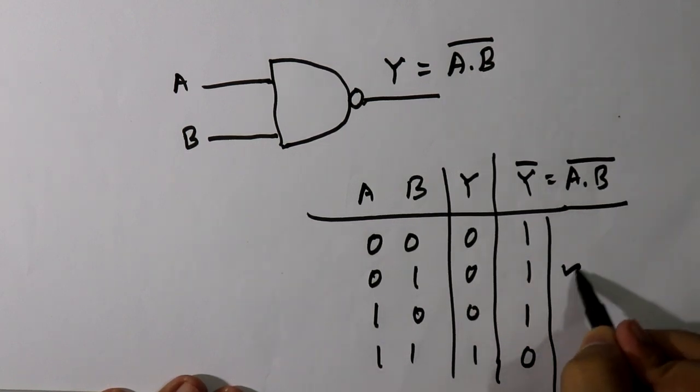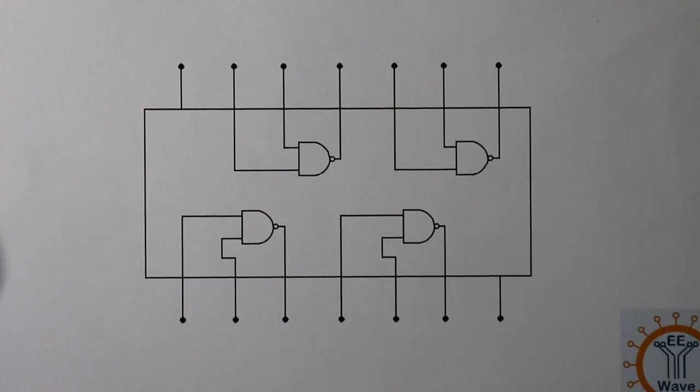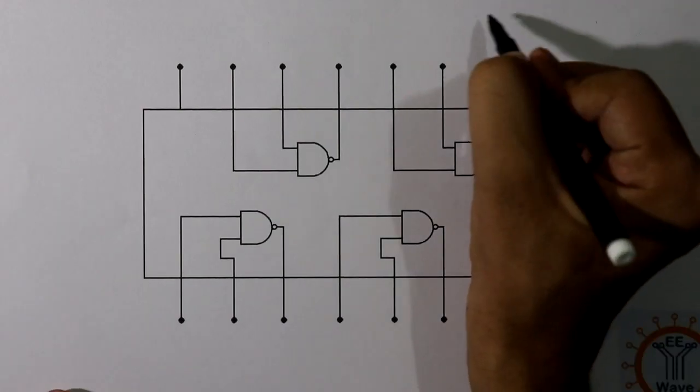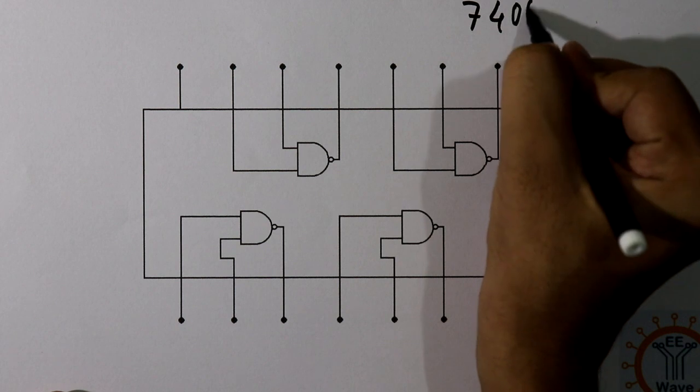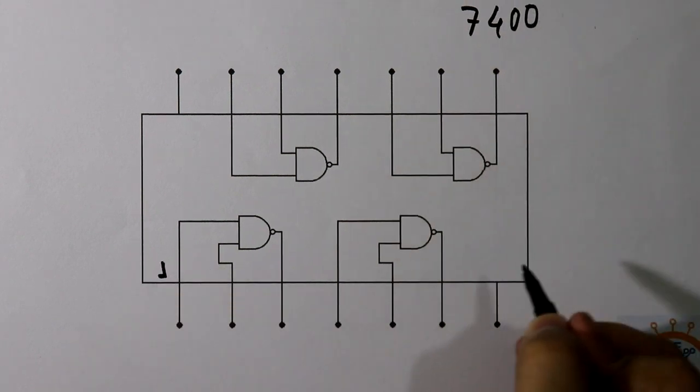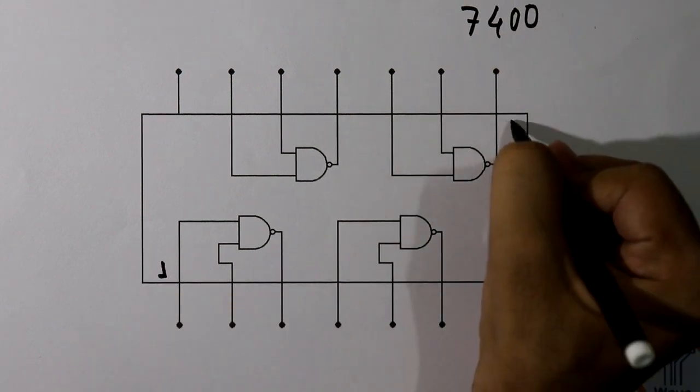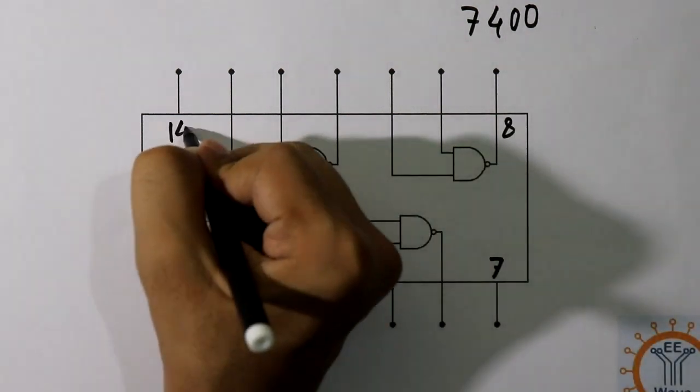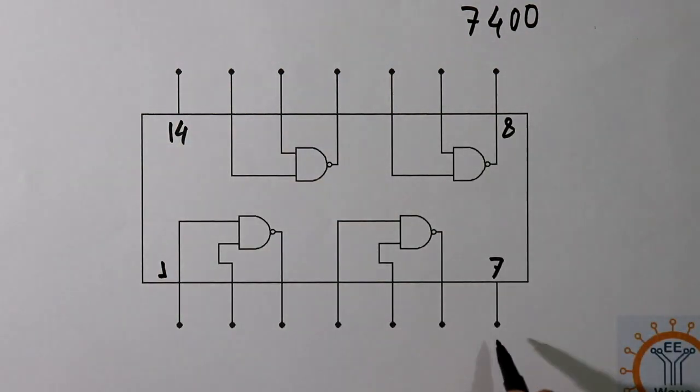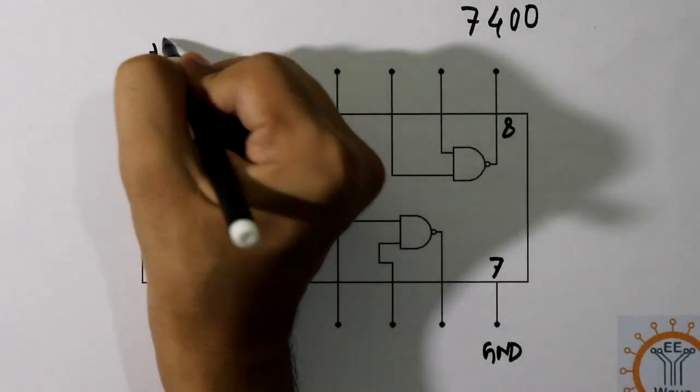Now let's see the pin diagram of IC 7400. Here it is pin number 1, pin number 7, pin number 8 to pin number 14. Pin number 7 is connected to the ground and 14 is connected to the plus 5 volt.